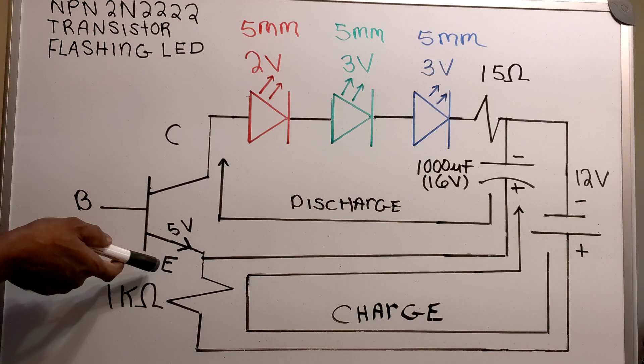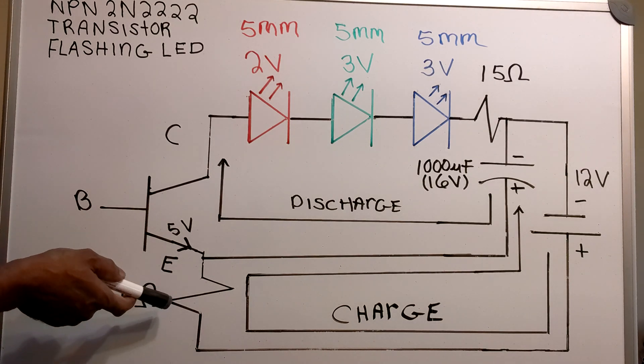On the emitter side, I have a 1K ohm resistor.